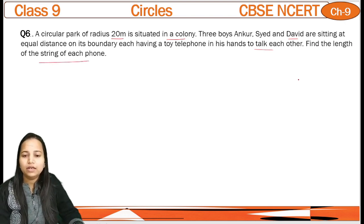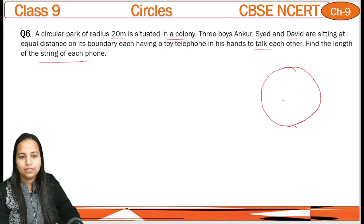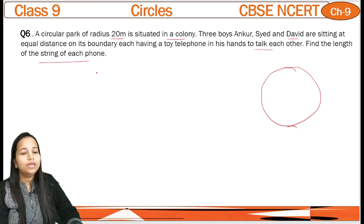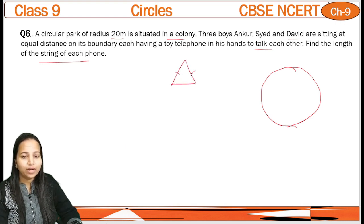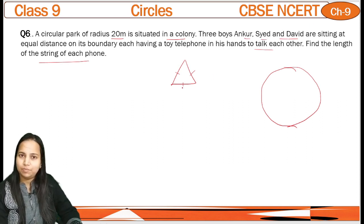So, kya given hai humein? Ek circular park hai jiska radius 20 meter hai. Wahan pe three boys hain — Ankur, Sayyad and David — jo ke equal distance pe baithe hain. Ab dekhiye, agar wo equal distance pe baithe hain, to that means wo triangle kya hai? Equilateral triangle hai. 3 points ban rahe hain equal distance pe, so that would be an equilateral triangle.